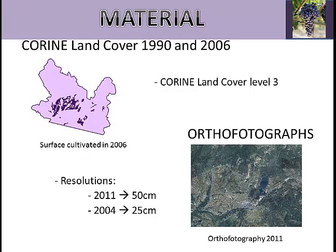Corine Landcover is a land cover map from Spain developed by CNIG. We used that cartography to help us find training areas and ground truth areas of the vineyard class from the study area. Orthophotographies were provided by PNOA and were another tool to choose the training areas and ground truth areas of the classes. They are not available from the 90s, so we used the oldest orthophotograph accessible. The orthophotograph from 2004 has a spatial resolution of 25 centimeters and the one from 2011 has 50 centimeters.